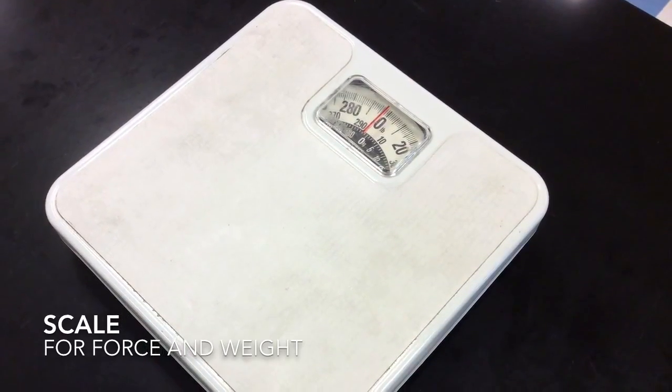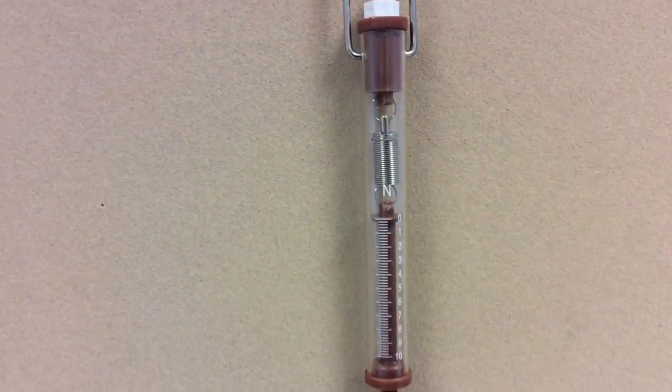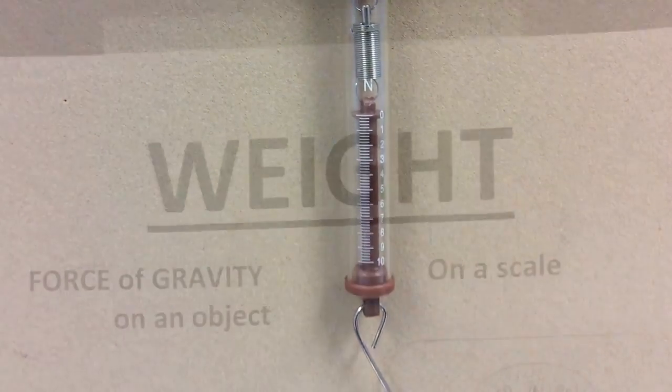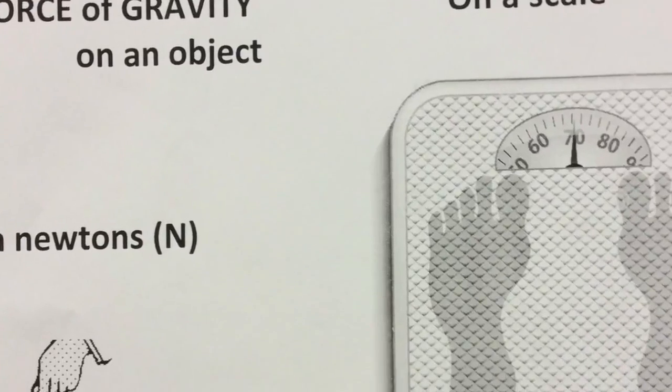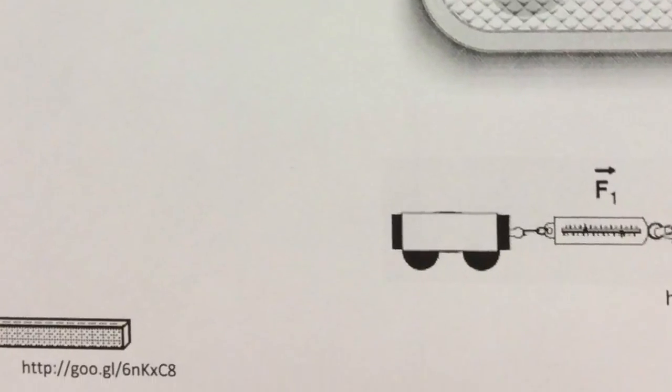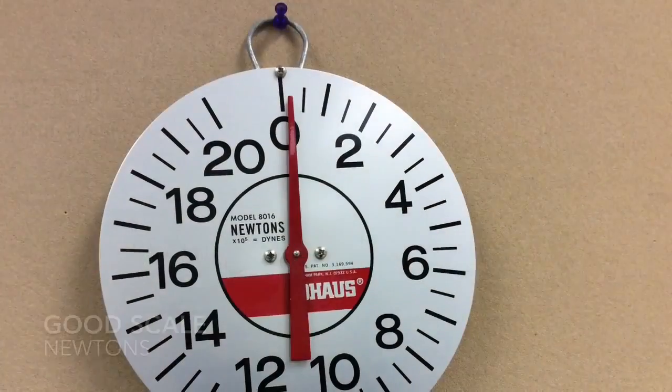This is a scale. It's for force, sometimes for weight. Here's another type of scale, also for force and weight. In contrast with mass, weight is a force of gravity on an object measured using a scale, and it changes depending on where you go in the universe.